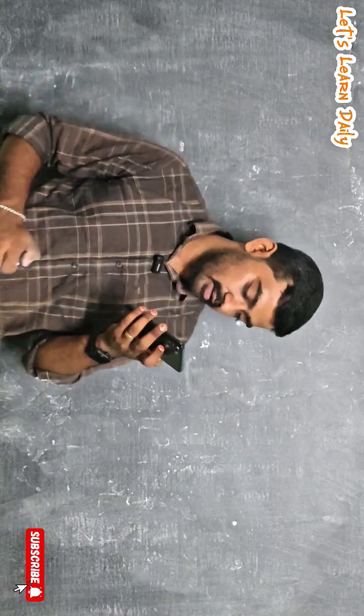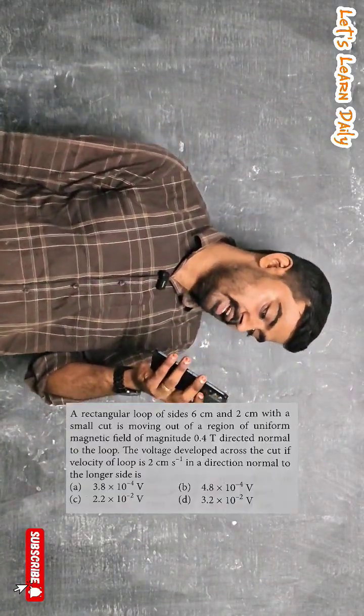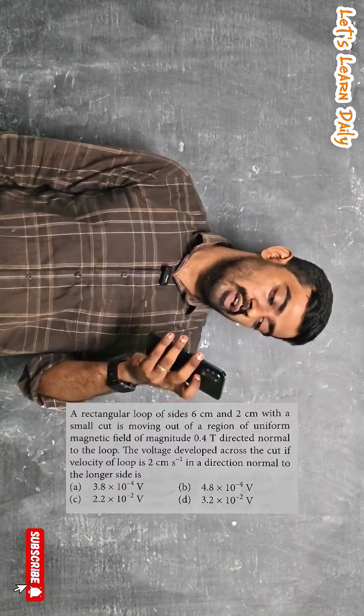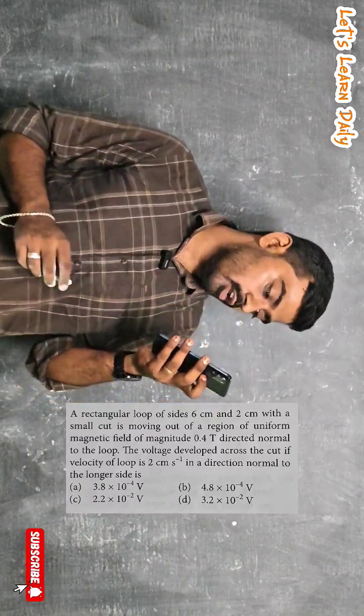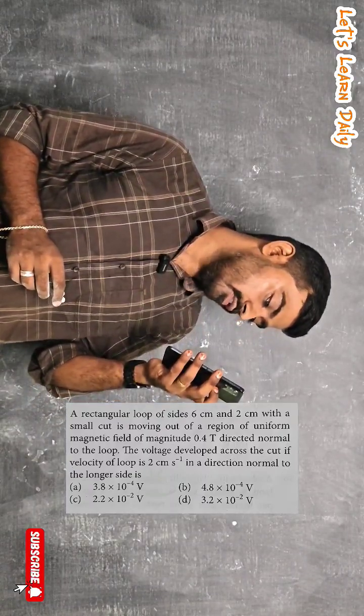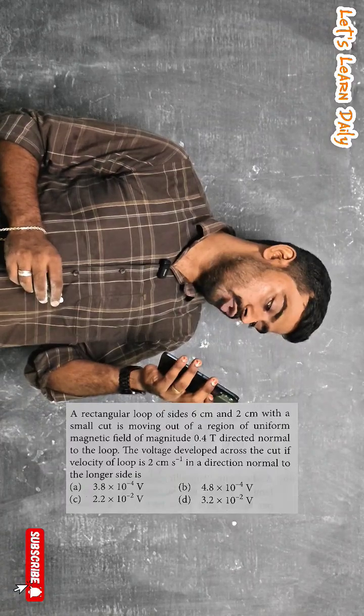Hi students, welcome to our channel. Let's learn daily. So in the NEET JEE series, a rectangular loop of sides 6 centimeter and 2 centimeter with a small cut is moving into a region of uniform magnetic field of magnitude 0.4 tesla, direction normal to the loop. The voltage developed across the cut if velocity of loop is 2 centimeter per second in a direction normal to the longer side is dash.